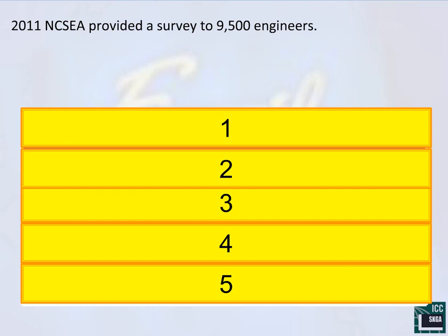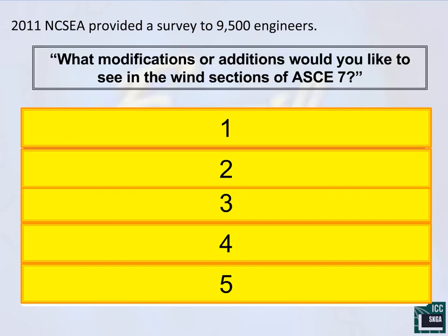Before I go into the details, I want to let you know that this survey was actually repeated in the last six months, and the results of that most recent survey are just now being studied — I took a look at them this morning. This survey is slightly out of date, but I'd like to show you the process by which a practicing engineer's voice can be heard and ultimately make its way into the code. The specific question I want to focus on today was: what modifications or additions would you like to see in the wind sections of ASCE 7?